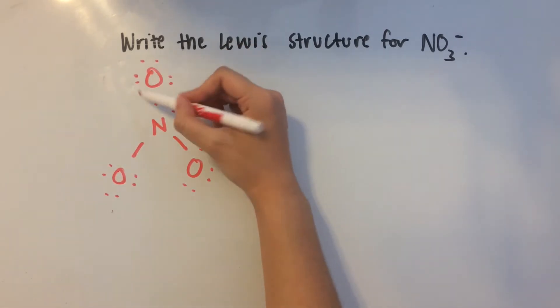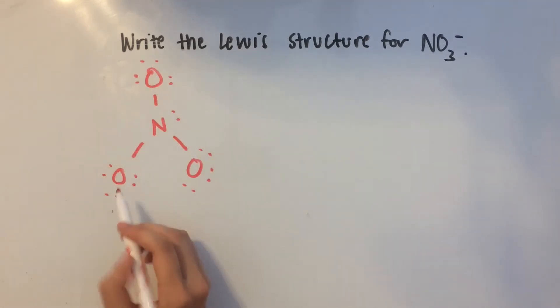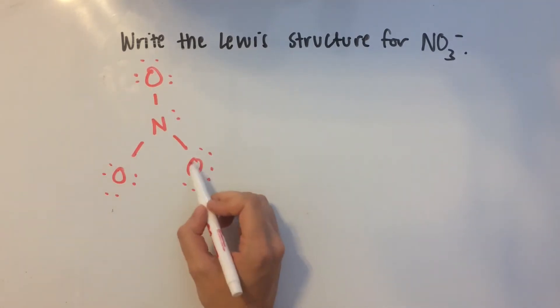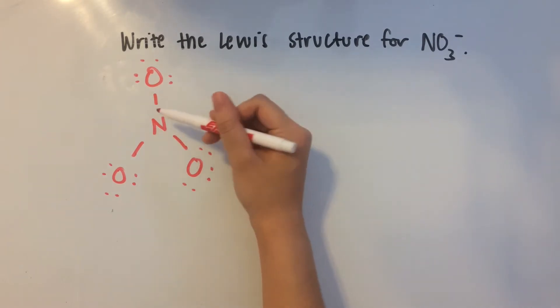So let's see, this oxygen has an octet because one, two, three, four, this oxygen does, this oxygen does, and this nitrogen does because one, two, three, and four.